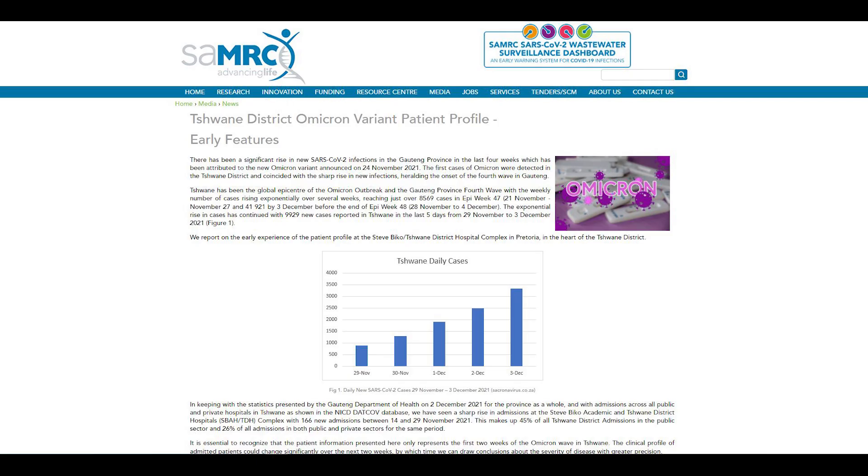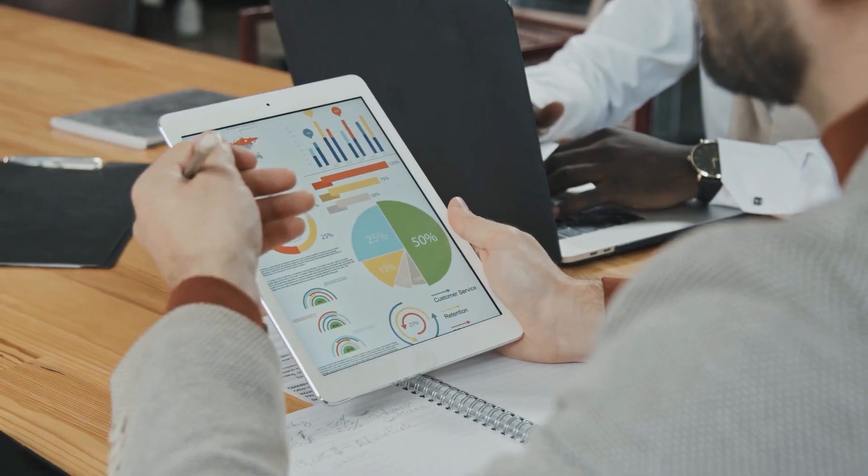That new test came out after the initial findings of Omicron analysis were announced by researchers in South Africa. The South African Medical Research Council announced that the variant doesn't seem to cause severe COVID-19.